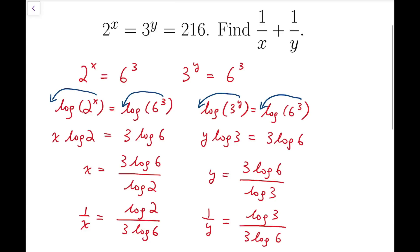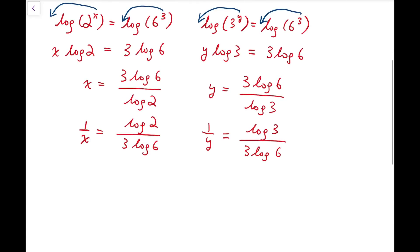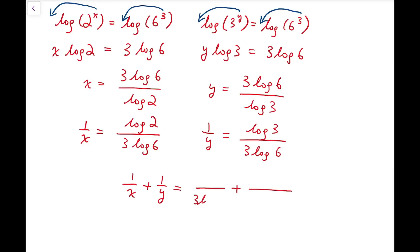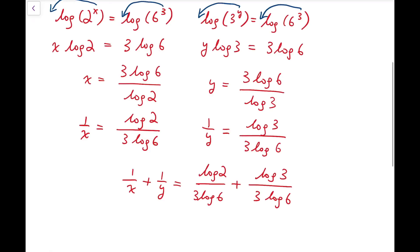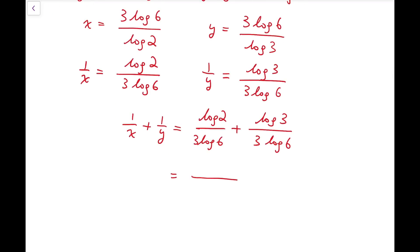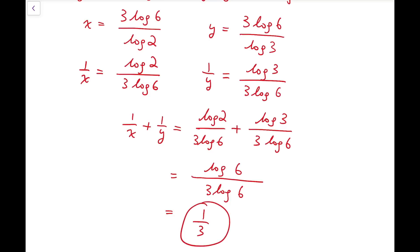So now we can add them directly, because they are two fractions with exactly the same denominator: 3 times log 6. The numerators are just logarithms and they can be added together, which is equal to log of 2 times 3, which is exactly 6. So log 6 can be cancelled out, meaning 1 third is our final answer. This is the first method to solve this problem.